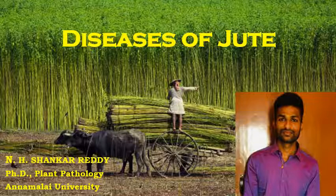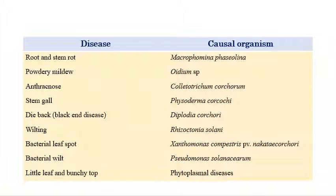Diseases of jute. We will see the important diseases that can affect jute. The scientific name of jute is Corchorus capsularis. My name is N.H. Shankar Reddy and I am doing a PhD in Plant Pathology at Alamal University. These are all the important diseases in jute.